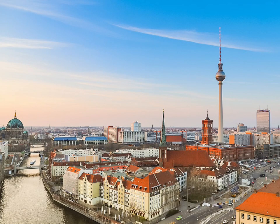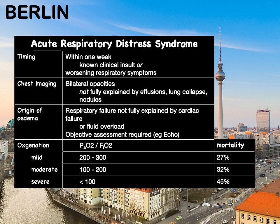This is a beautiful image of the European city of Berlin, included as a memory aid to help us remember the Berlin classification of ARDS. So on this slide I've put up the Berlin definition of ARDS. ARDS — acute respiratory distress syndrome — is a life-threatening respiratory condition characterized by hypoxemia, very stiff lungs, and the patient is usually pretty sick.